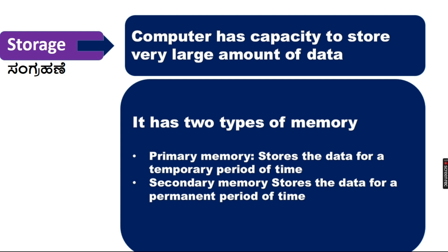And now, the computer has two types of memory: primary memory and secondary memory. Primary memory is RAM. As discussed in the last class, the data is not stored permanently — it is only temporarily stored. If the power is off, the data will be lost. This is primary memory.